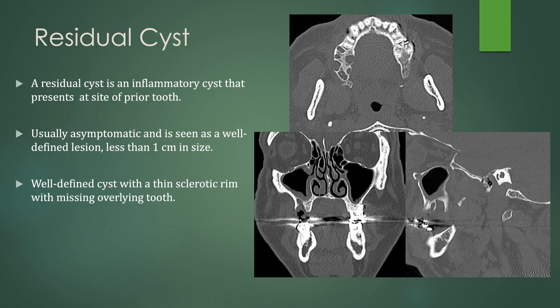A residual cyst is an inflammatory cyst that presents at the site of a prior tooth, usually after extraction of the tooth. These are also usually asymptomatic. It's seen as a well-defined lesion less than one centimeter in size, also a well-defined cyst with a thin sclerotic rim. However, the overlying tooth is missing. So you look for that lucency with a thin rim of sclerosis at the site of a prior tooth.